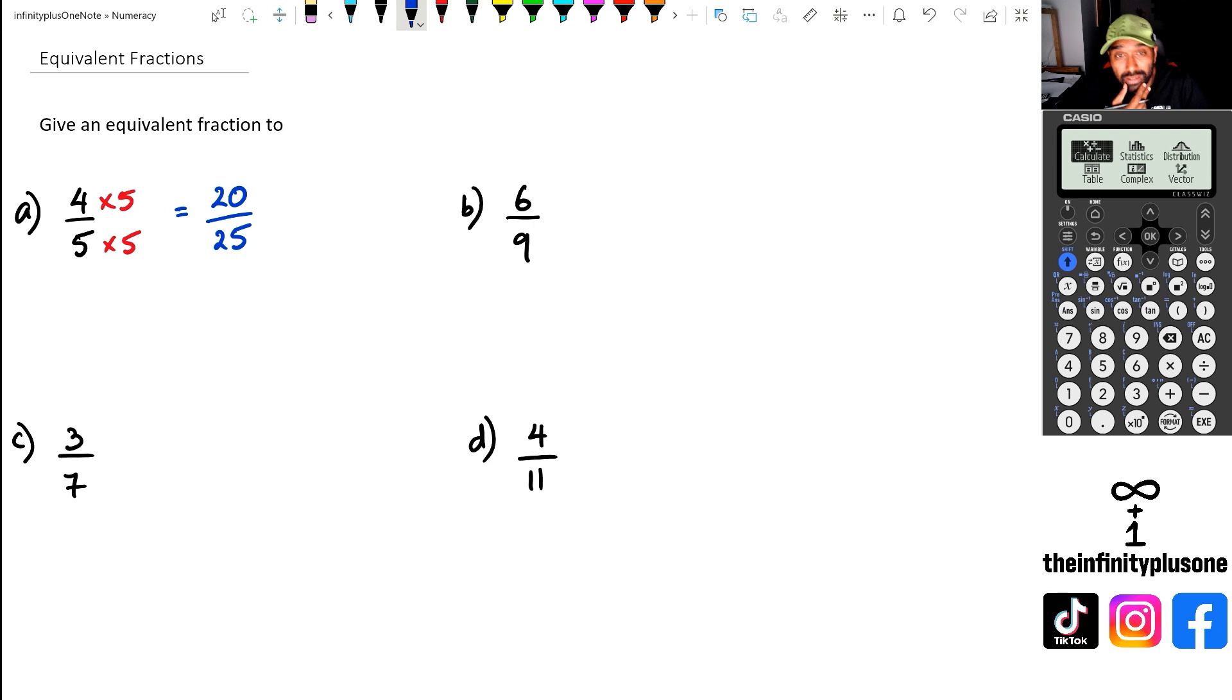Now looking at question B, six over nine. Again, we can multiply by any number. So in this one, I might try times it by 10 for the numerator, and for the denominator I'm also going to multiply by 10. So in this case, I'm going to get 60 over 90.